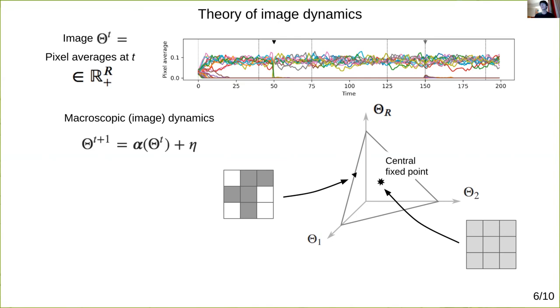The analysis roughly proceeds by first realizing the uniform image is a fixed point of alpha simply by symmetry, and then by showing its stability depends on the number of pixels or the resolution r.